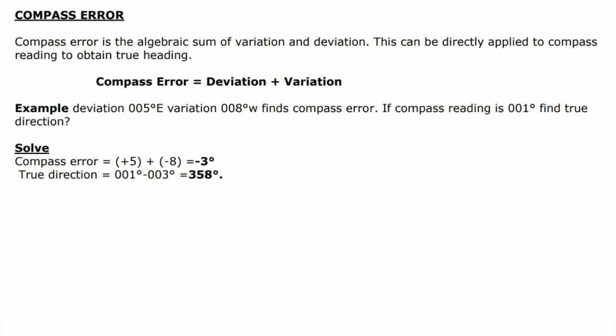For example: deviation is +5° east and variation is 8° west (−8°). Compass error = +5° + (−8°) = −3°. If the compass reading is 001°, to find true direction, directly apply the compass error: 001° − 3° = 358°. If compass error were +3°, then true direction would be 001° + 3° = 004°.